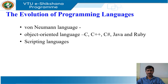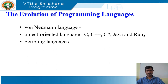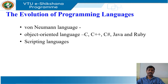Simula 67 and Smalltalk are the earliest major object-oriented languages. Languages such as C++, C#, Java and Ruby are more recent object-oriented languages. Scripting languages are interpreted languages with high-level operators designed for gluing together computations. Awk, JavaScript, Perl, PHP, Python, Ruby and Tcl are popular examples of scripting languages. Programs written in scripting languages are often much shorter than equivalent programs written in languages like C.